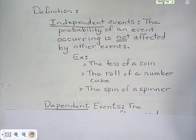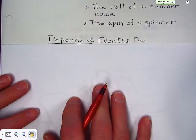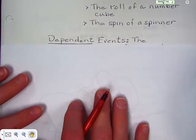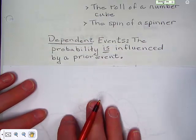Now, what is dependent? Dependent events are events that do depend on the previous outcome. So, the probability in dependent events is influenced by something that happened before.